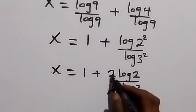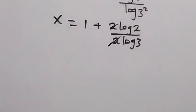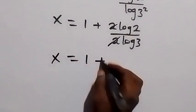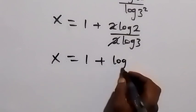The 2s cancel each other here, and what we have now can be written as x equals to 1 plus log 2 over log 3.